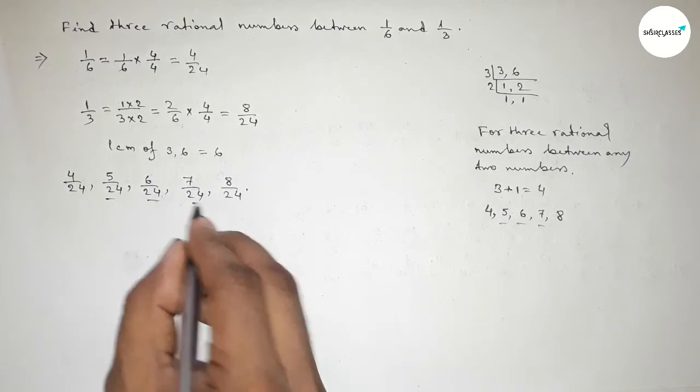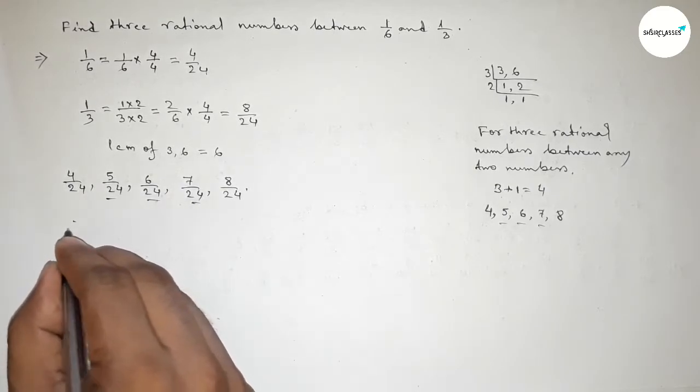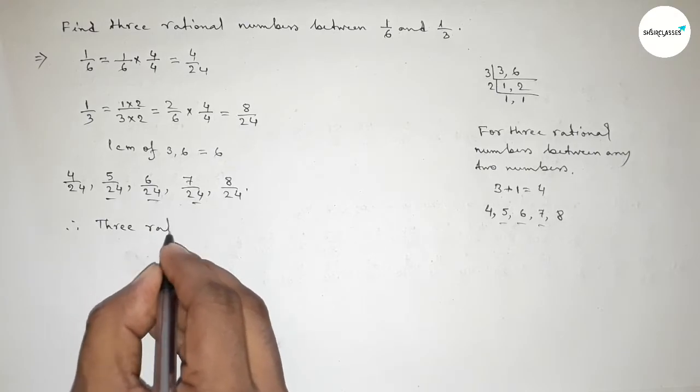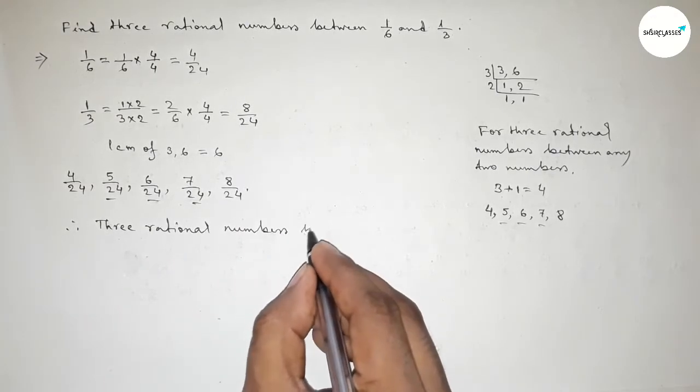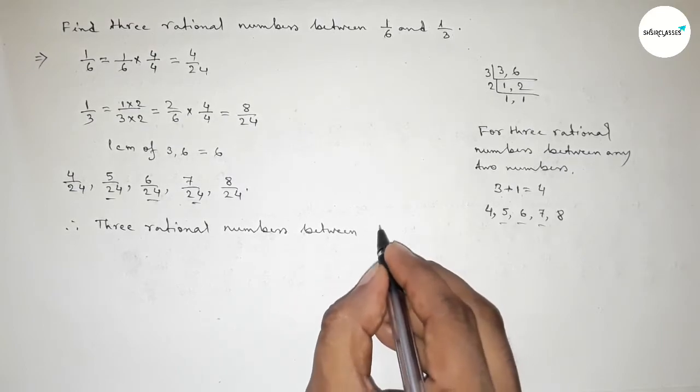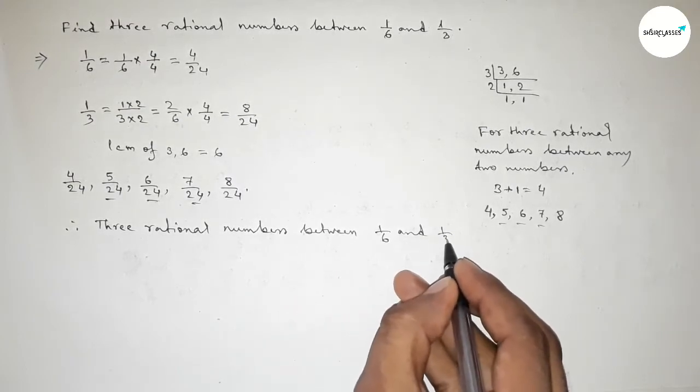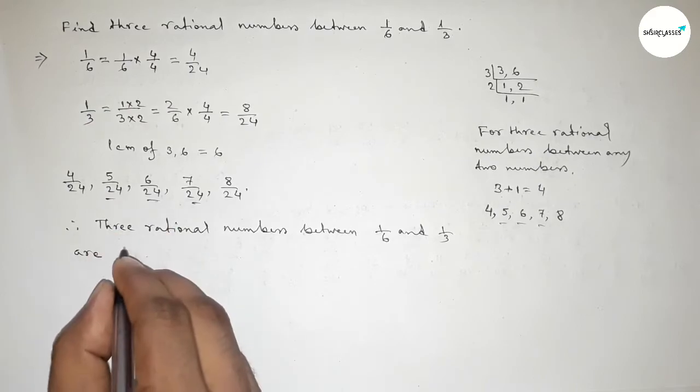Now between these, these are the three required rational numbers between 1 over 6 and 1 over 3. So therefore, the required three rational numbers between 1 over 6 and 1 over 3 are: